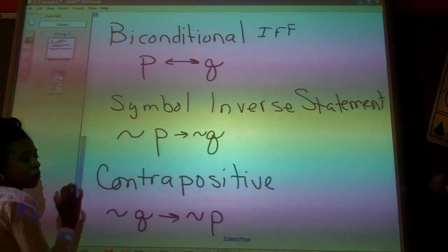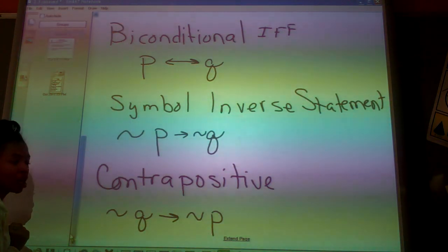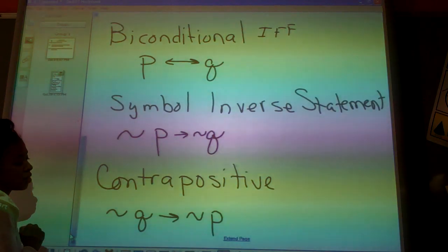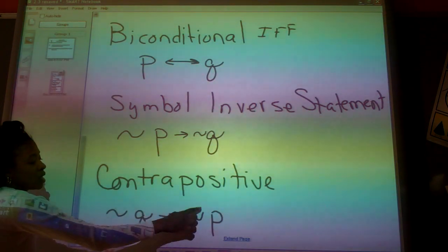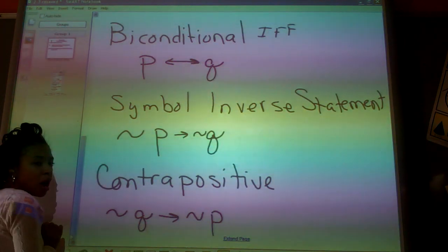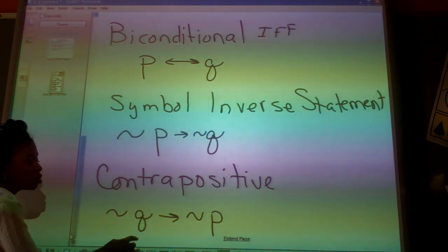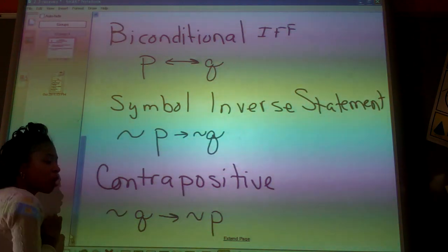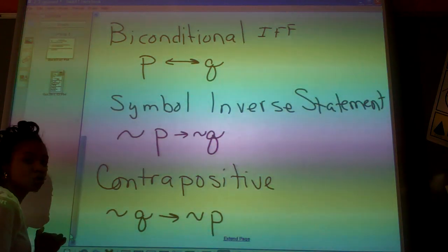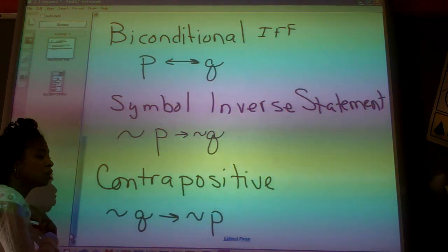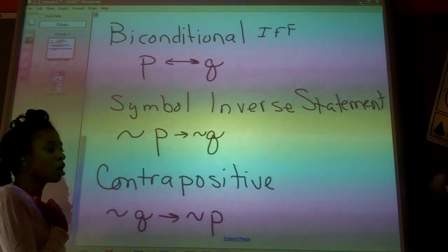So now I have them switched because the contrapositive is both the inverse and the converse together. So the squiggly line means not, and then Q is your conclusion, and P is your hypothesis. Again, Q is your conclusion, and P is your hypothesis.